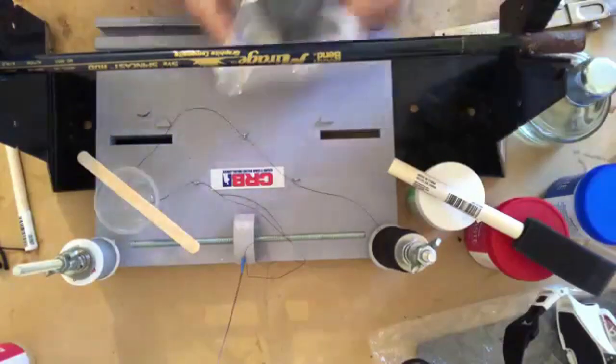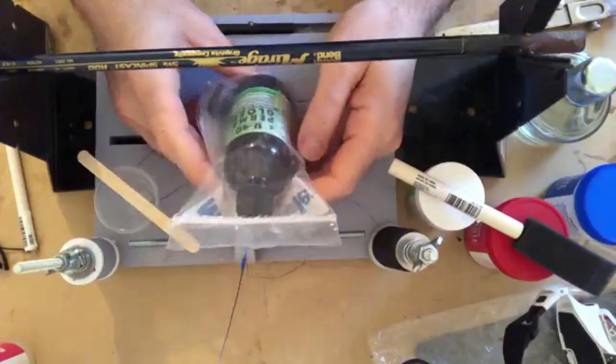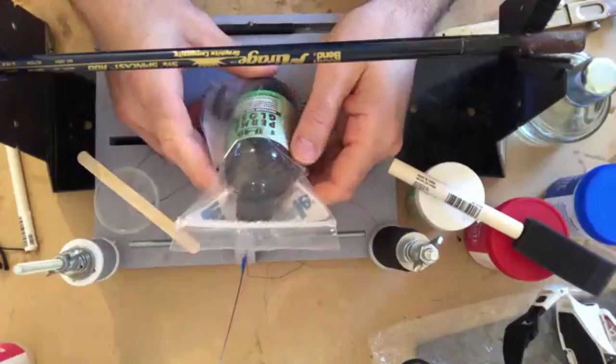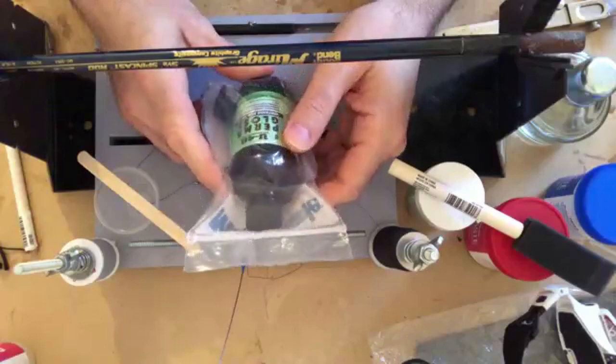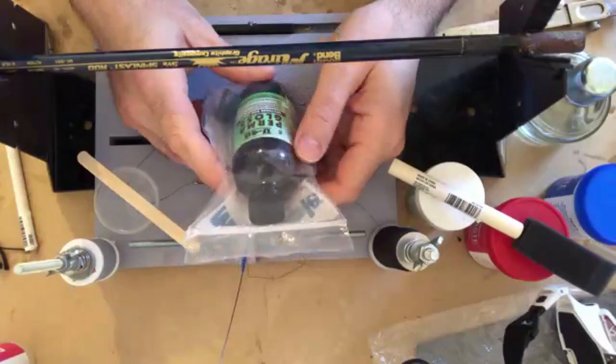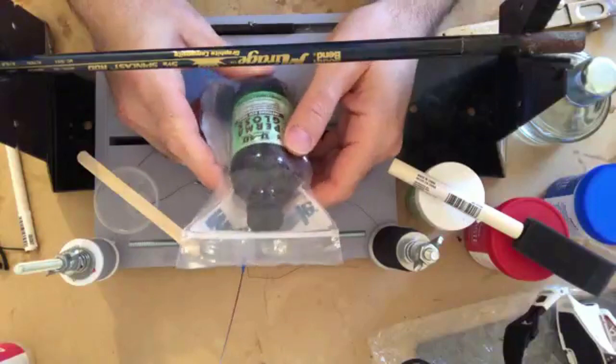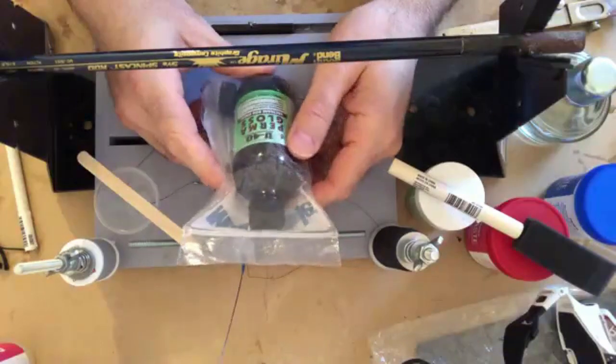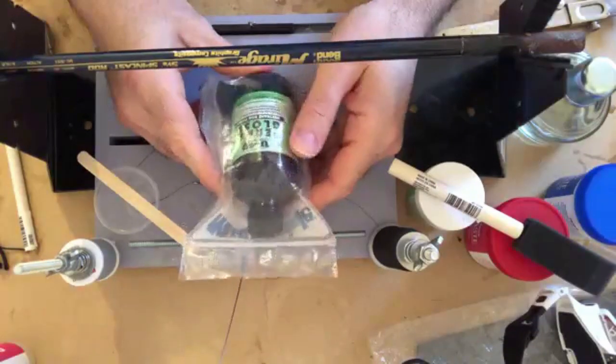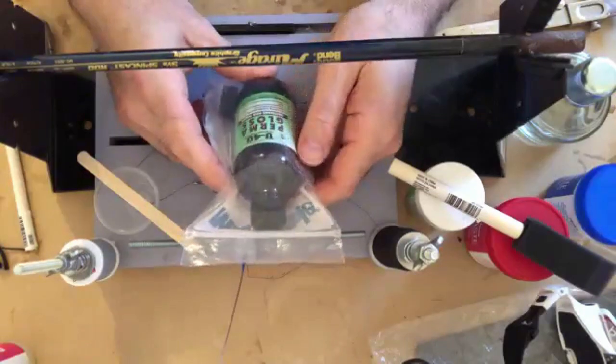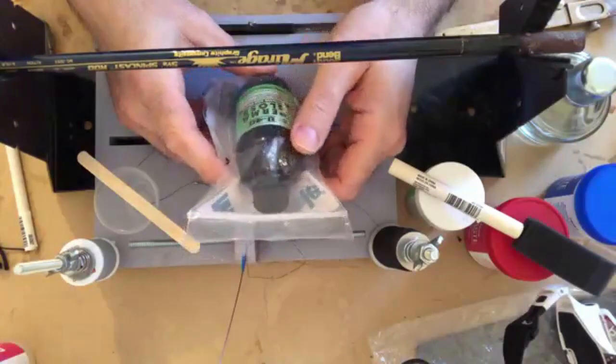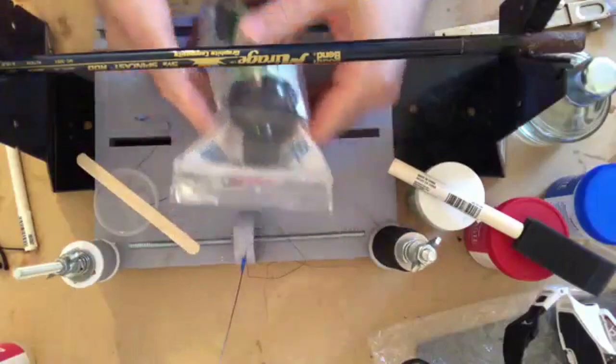And then you can use the Permagloss. You'll notice that I have this in the bag because it is some really nasty stuff. Highly, highly toxic. Don't ever use it indoors because you'll get very lightheaded very quickly. When you use this outside, you're still going to get lightheaded, but it gives an awesome finish on the rod and it'll keep it good for quite a long time.